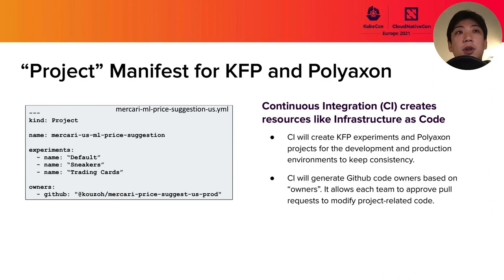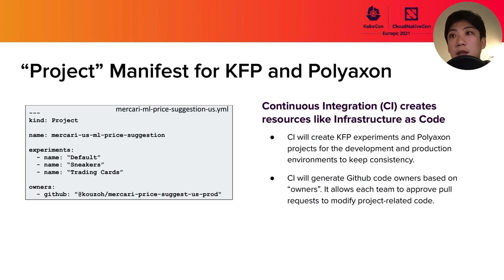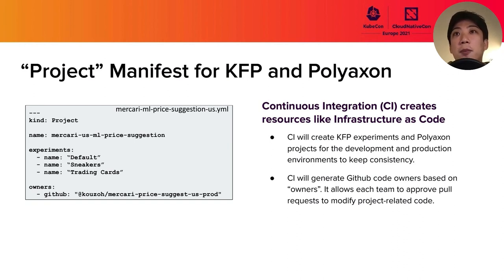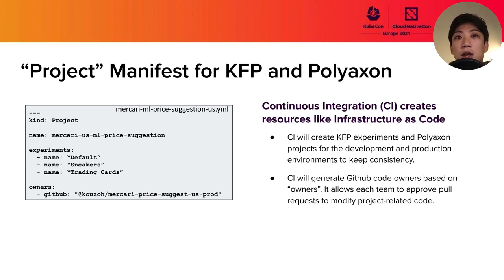Next is the Project Manifest for Kubeflow and PolyAxon resource management. We define a YAML specification for resource management. CI will create the Kubeflow Pipeline experiment and the PolyAxon project from this file, so we don't have to manually create these resources on the UI, and we can keep consistency between development and production environments. This manifest also has an owners field, which allows us to manage code review permissions and enables each team to approve pull requests that modify their related code.